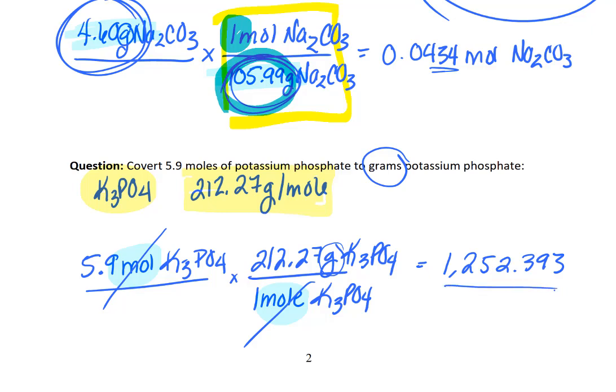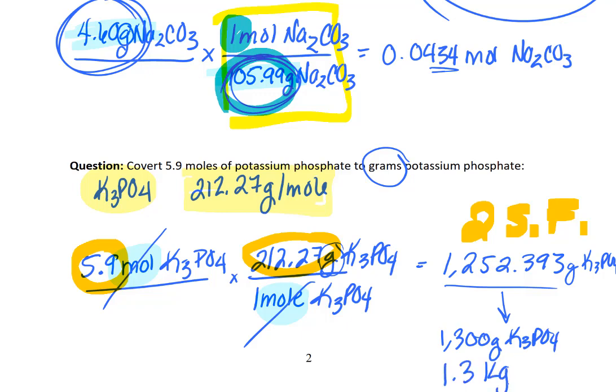So I wrote down for my answer what my calculator gave me, which is an outrageous number of significant figures. So for this particular problem, I have only two significant figures here to start with and then I have five here. So I need two sig figs here at the end. So now I'm going to round this to two significant figures. So when I round this to two significant figures, you might have chosen, this is grams by the way, of K3PO4, you might have chosen to round this to 1300 grams of K3PO4. But you could have also just written 1.3 kilograms of K3PO4. Whichever one you want to do is perfectly appropriate.